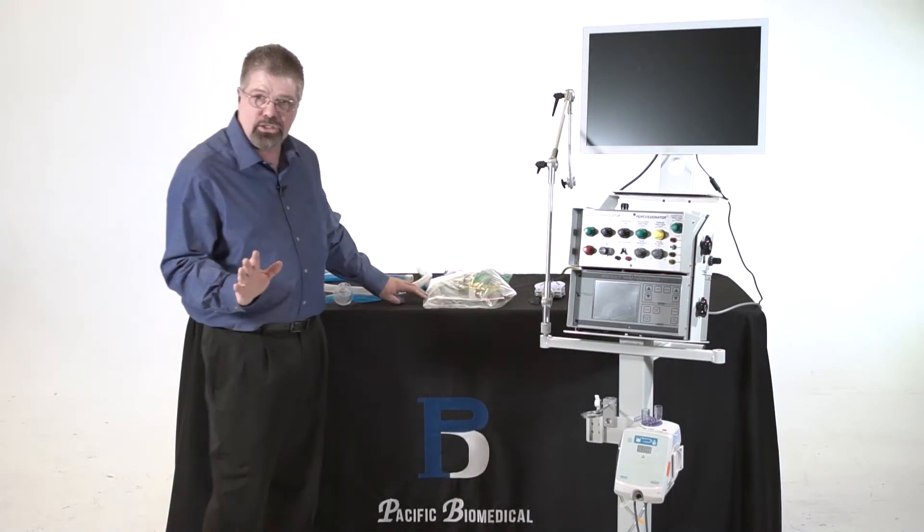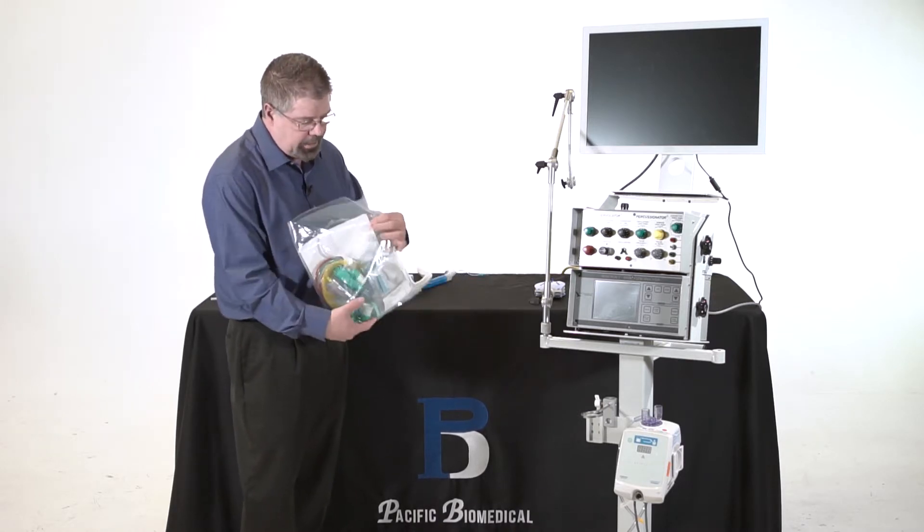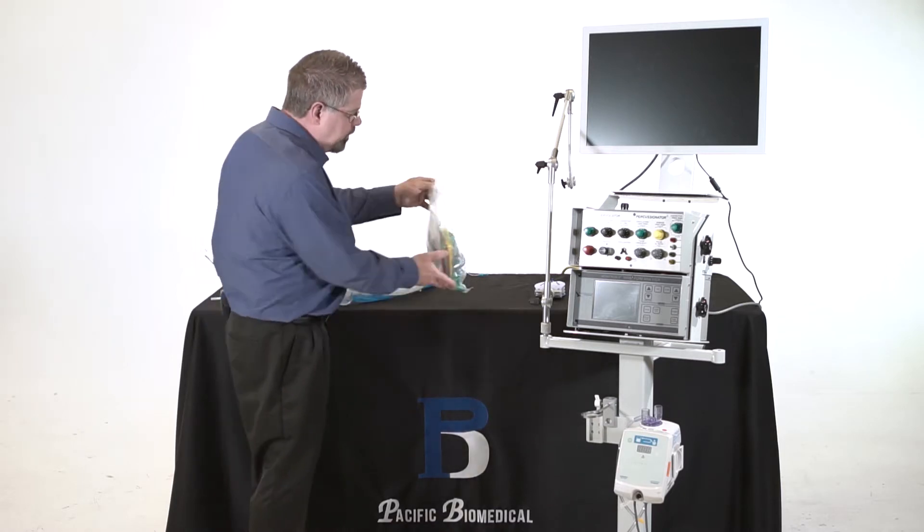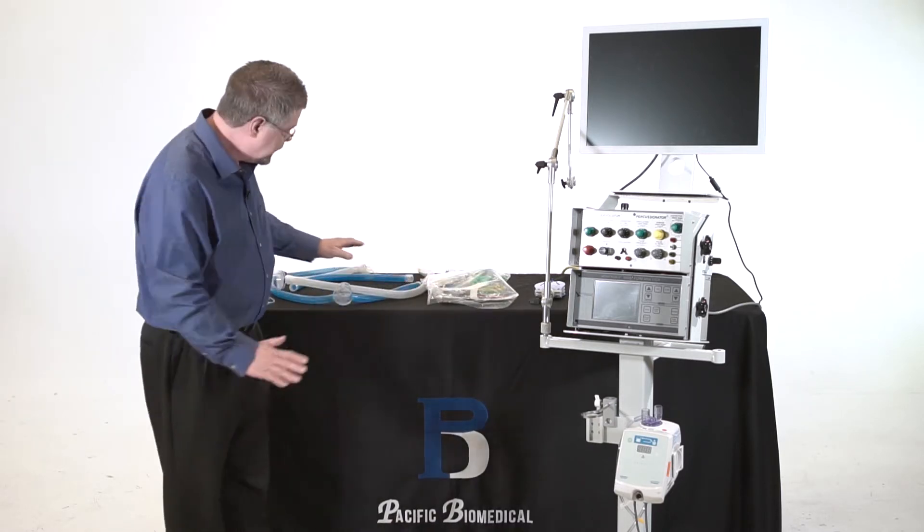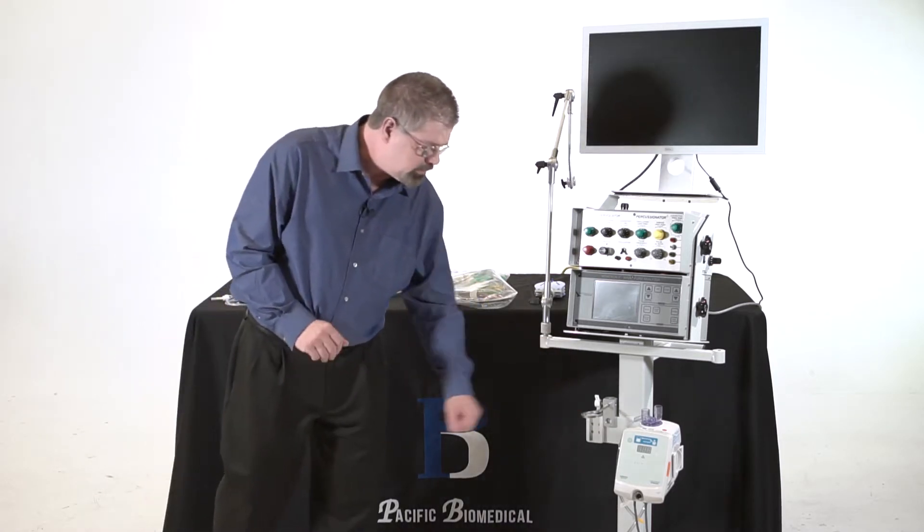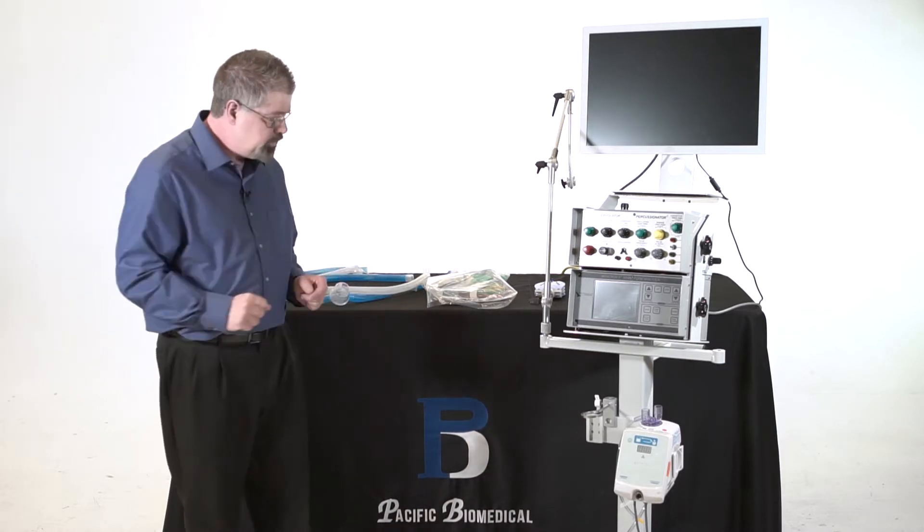What you need for the circuit is Percussion Air sends you a very nice kit that has all the parts that you'll need for that. And then what I'm also going to need to do is I'm going to need to have a standard ventilator circuit to go with it. So whatever your humidifier system that you use, you take your ventilator circuit and marry the two together.